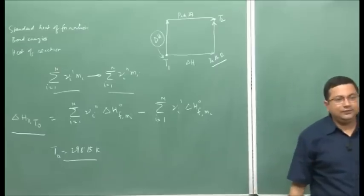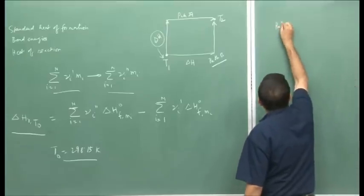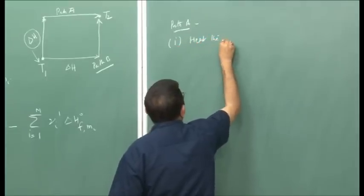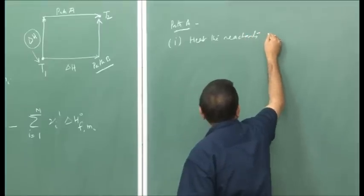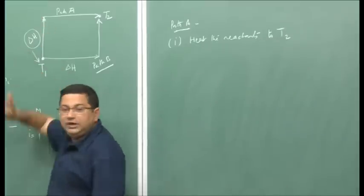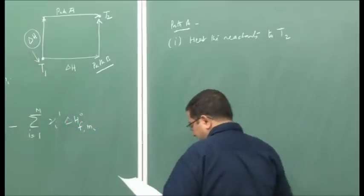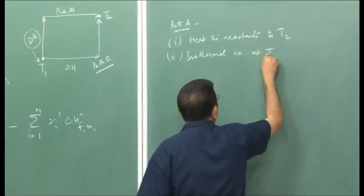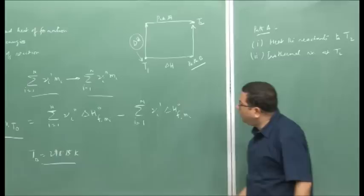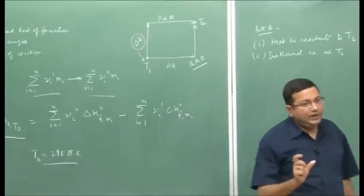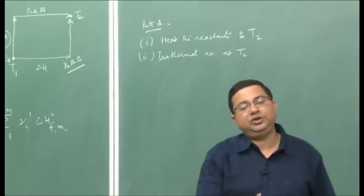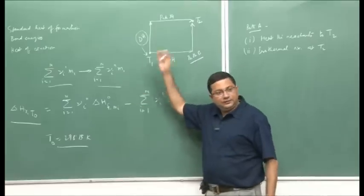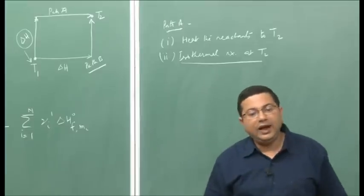To summarize the two paths: path A corresponds to two steps — first, heat the reactants to temperature T2, for which we need to supply ΔH; and second, isothermal reaction at T2. The isothermal reaction is important because heat of reaction is defined when the chemical reaction takes place at constant pressure and constant temperature, with only change in composition.